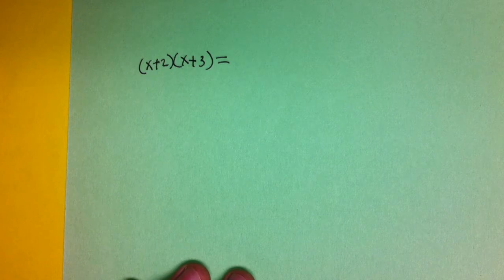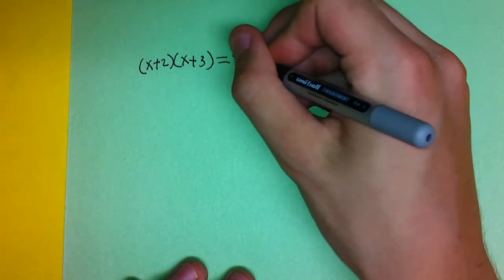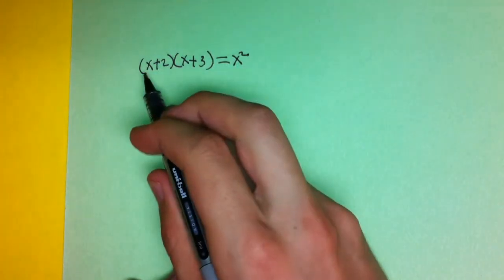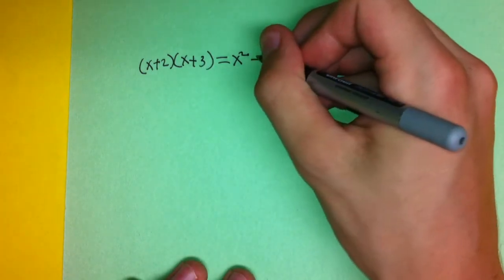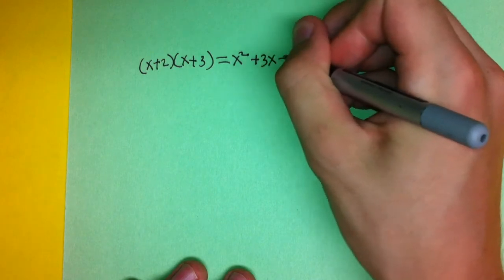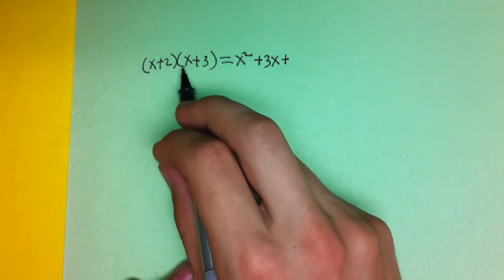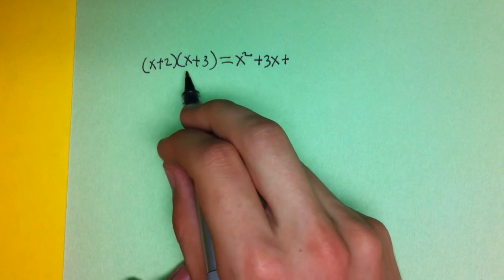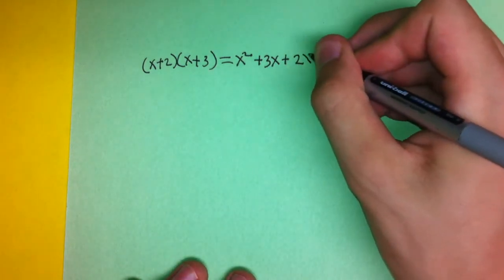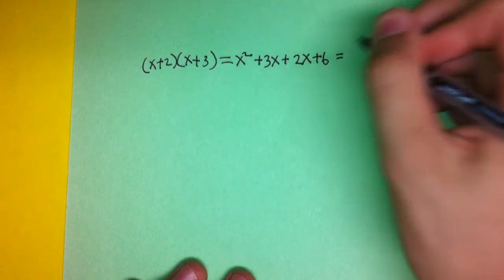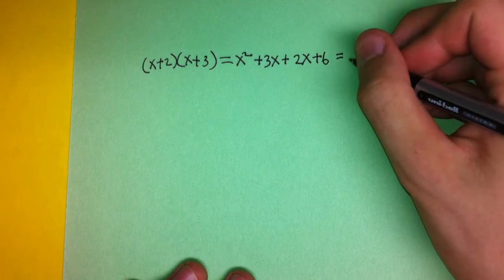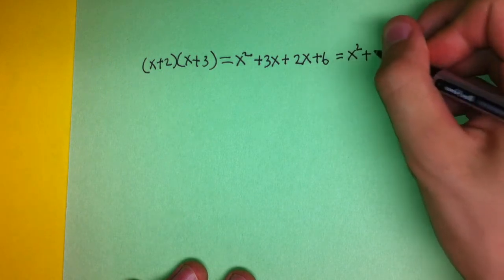The first example problem was (x + 2)(x + 3). Multiplying the first term with the first term in each expression gives x squared. Then multiplying that same first term with the second term gives 3x. Then adding 2x as we move to the second term times the first term in the next expression, and finally 2 times 3 is plus 6. So 3x and 2x combine, giving x squared plus 5x plus 6.